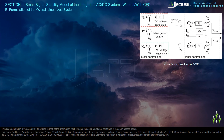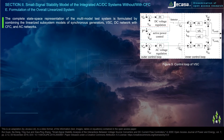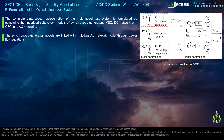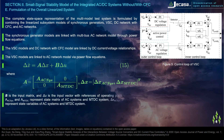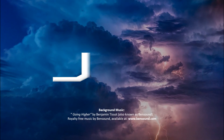Formulation of the overall linearized system: the complete state space representation of the multi-model test system is formulated by combining the linearized subsystem models of synchronous generators, VSC, DC network with CFC, and AC networks. The synchronous generator models are linked with the multi-bus AC network model through power flow equations; the VSC models and DC network with CFC model are linked by DC current-voltage relationships; and the VSC models are linked to the AC network model via power flow equations. The combined state matrix A equals a block-diagonal form, where A_OXY and A_MTDC represent state matrices of the AC system and MTDC system, and delta-z_AC and delta-x_MTDC represent their respective state variables.